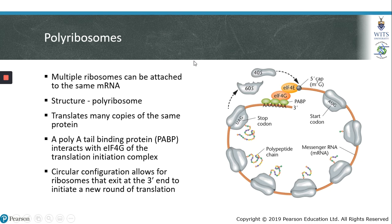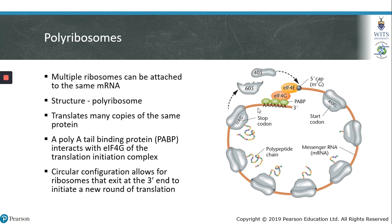As mentioned before, eukaryotic mRNAs are monocistronic, which means that each mRNA codes for a single protein. However, a single mRNA can be translated into multiple copies of the same protein because many ribosomes can bind to a single mRNA at the same time. This structure is called a polyribosome — meaning that many ribosomes are bound to the same mRNA.